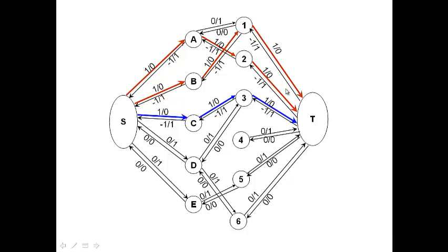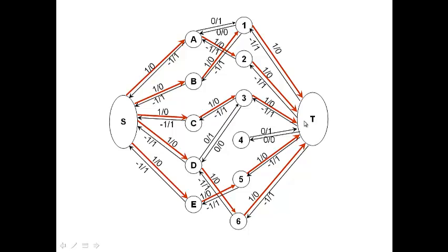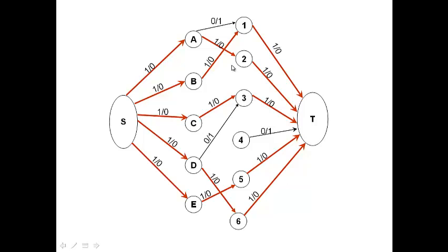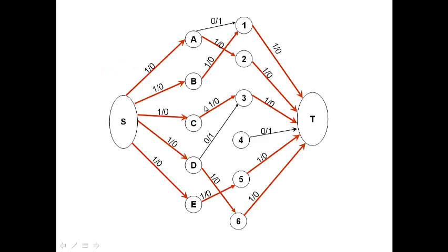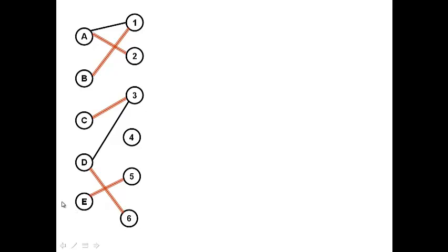Next, we send flow along s→c→3→t, then s→e→5→t, each sending one unit of flow. Eventually all the edges used to send flow are colored red. Looking at just those edges across from the left set to the right set, we get five edges — one, two, three, four, five — and those five edges form your maximum matching. They also form a minimum cut for this flow graph. So the maximum matching equals five edges.